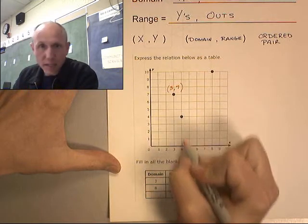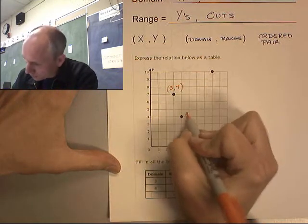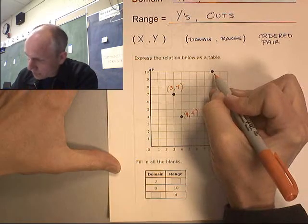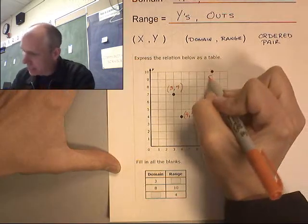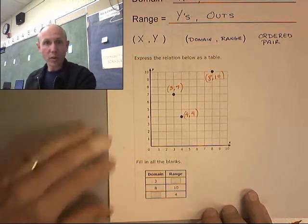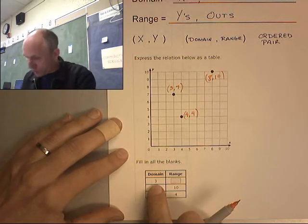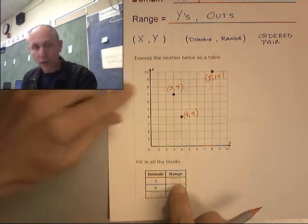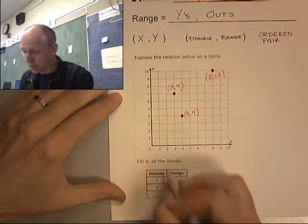This point is at, where is that at? 4, 4. And this one is at 8, 10. And all the question's asking you for is, hey, if the domain, if the X is 3, what's the Y that goes with that? Well, it's 3 and 7.